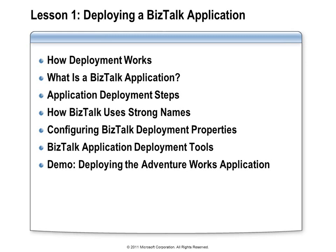Once we have a sense of how BizTalk deployment works and what makes up a BizTalk application, I'll walk you through the sequence of steps that's required to actually deploy an application. We need to talk about this idea of strong names that will be applied to our assemblies. And then I'll show you how to configure the deployment properties for your BizTalk solution in Visual Studio. Visual Studio is just one of the tools available to you to assist with deployment, so we'll spend a couple of minutes talking about the other tools that are available as well.